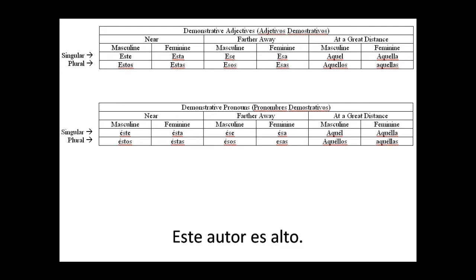What you're going to do is eliminate the word autor from your sentence and put an accent mark over the first e on este. And you would have éste es alto.